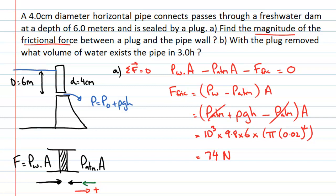We can quickly check this: if we increase the depth by moving the pipe lower, the ρgh term gets larger, so the frictional force would need to be bigger as the pressure increases — that makes sense. For part B, we want to find the amount of fluid leaving the hole, which is now a hydrodynamic problem.